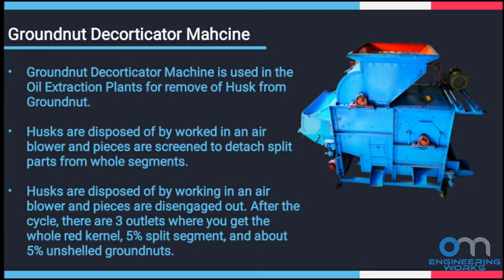Groundnut decorticator machine is used in the oil extraction plants for removal of husk from groundnut. Husks are disposed of by a built-in air blower and pieces are screened to detach split parts from whole segments.